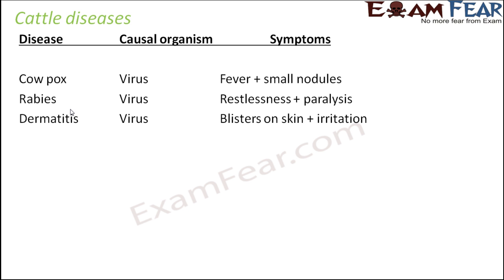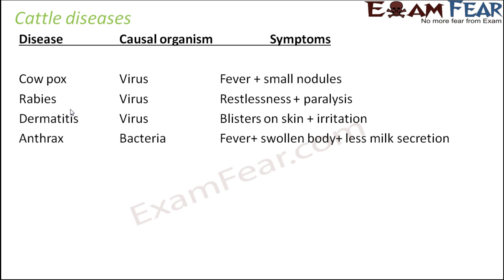Dermatitis — 'derma' comes from skin, so dermatitis refers to anything that happens on the skin: blisters, irritation, and itching. Dermatitis is caused by a virus. Anthrax is caused by bacteria.